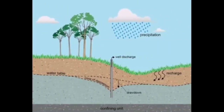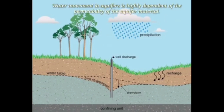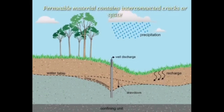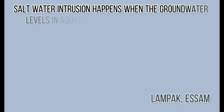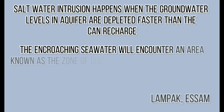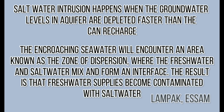Water movement in aquifers is highly dependent on the permeability of the aquifer material. Permeable materials contain interconnected cracks and spaces that are porous enough to allow water to move freely. Salt water intrusion happens when groundwater levels in aquifers are depleted faster than they can recharge, causing encroaching sea water to enter a zone of dispersion where fresh water and salt water mix, contaminating fresh water supplies.